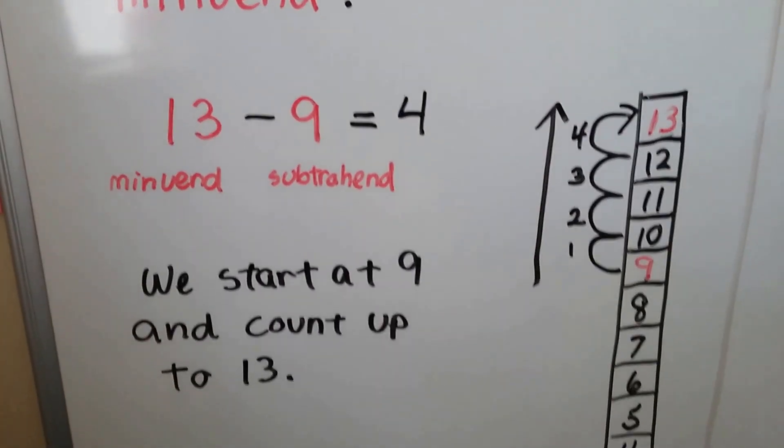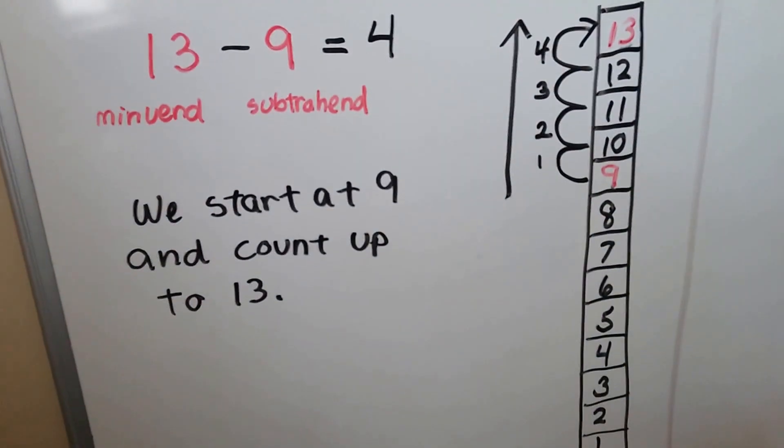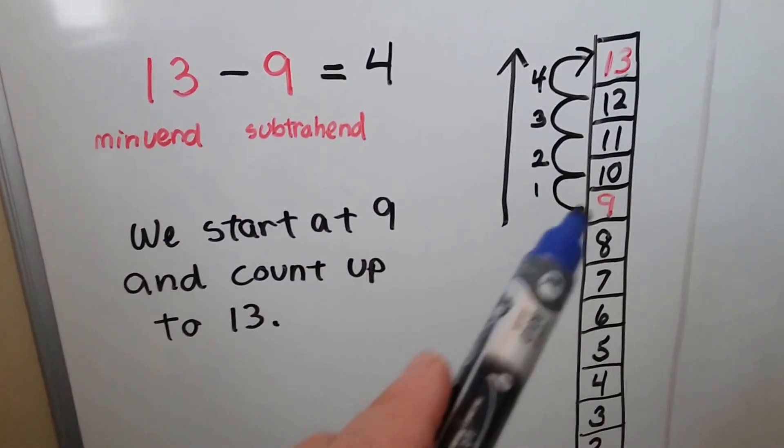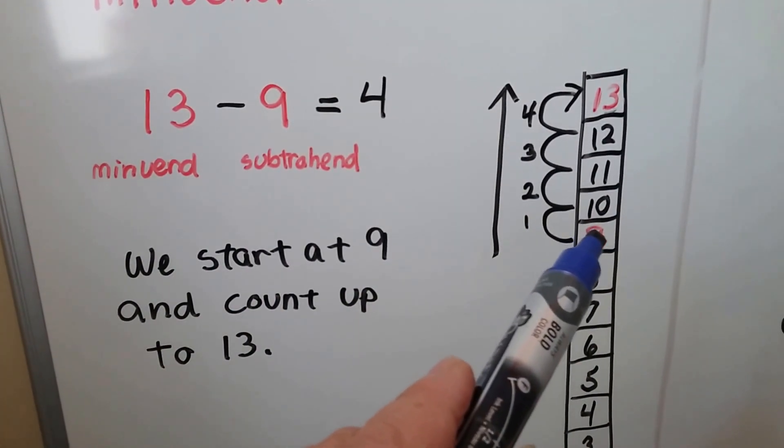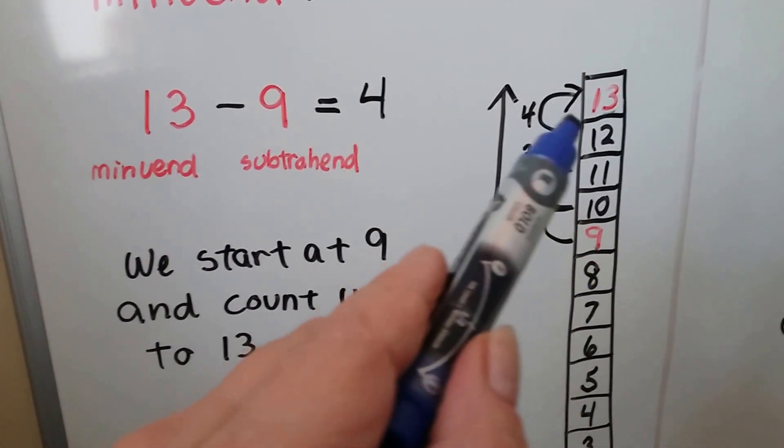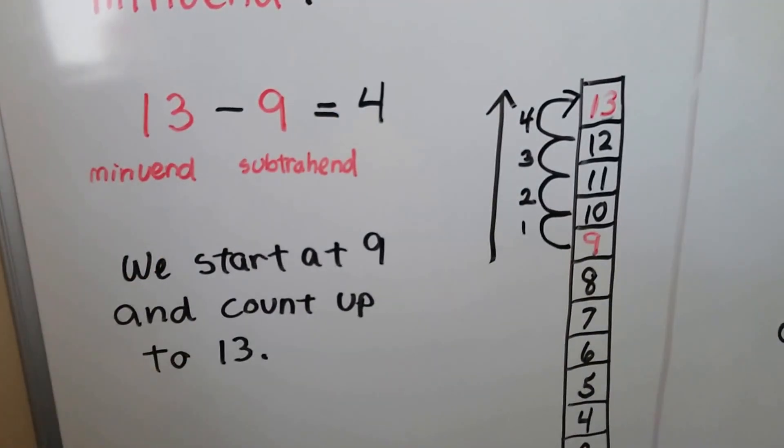We start at the 9 and count up to the 13. Here we have some numbers from 1 to 13. We start at the 9 and hop and count up to the 13: 9, 10, 11, 12, 13. That's 4 hops, so 13 minus 9 is 4.